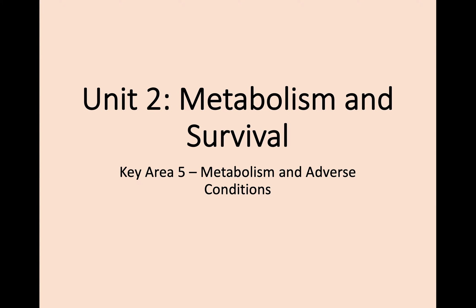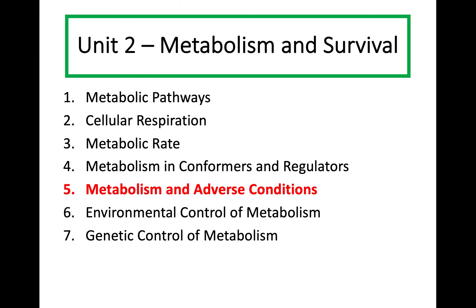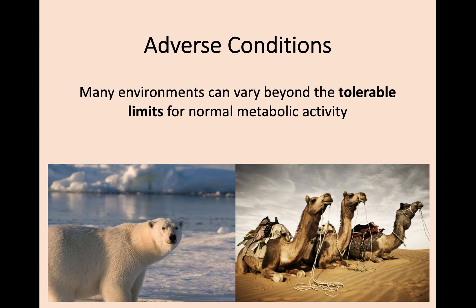Hi everyone, and welcome back to Higher Biology. We're continuing today with Unit 2, Metabolism and Survival, and we're moving on to Key Area 5, which is Metabolism and Adverse Conditions. We've spoken before about metabolism and metabolic rate, and previously we spoke about the responses of our body towards changes in temperature through thermal regulation. We're going to expand on this a little bit more, talking about conformers and regulators, and different ways that animals can cope with adverse or challenging conditions in the external environment.